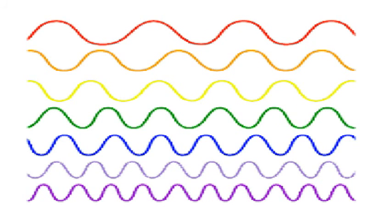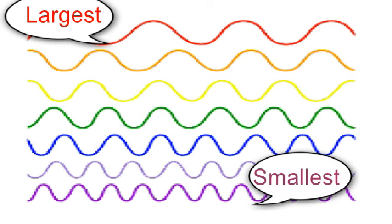As we know, 7 colors have its own wavelength. Red has the largest and violet has the smallest.